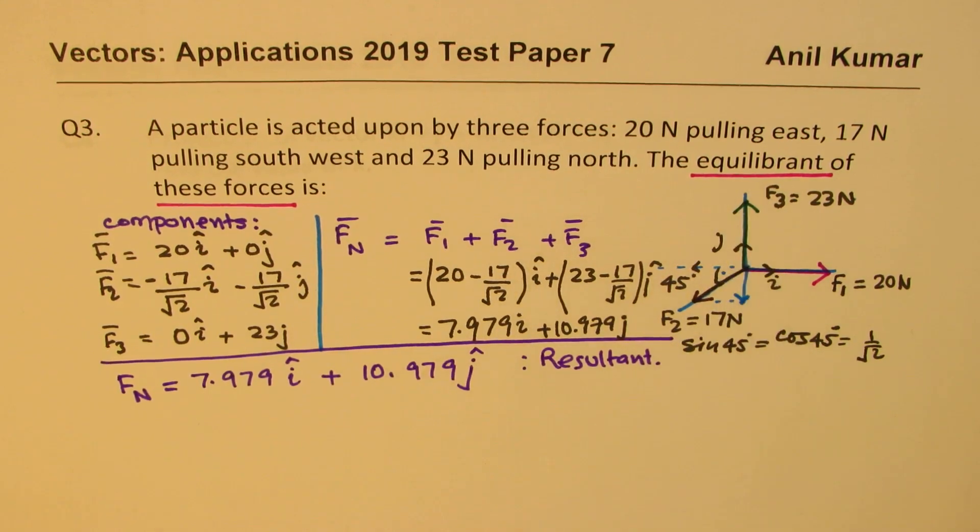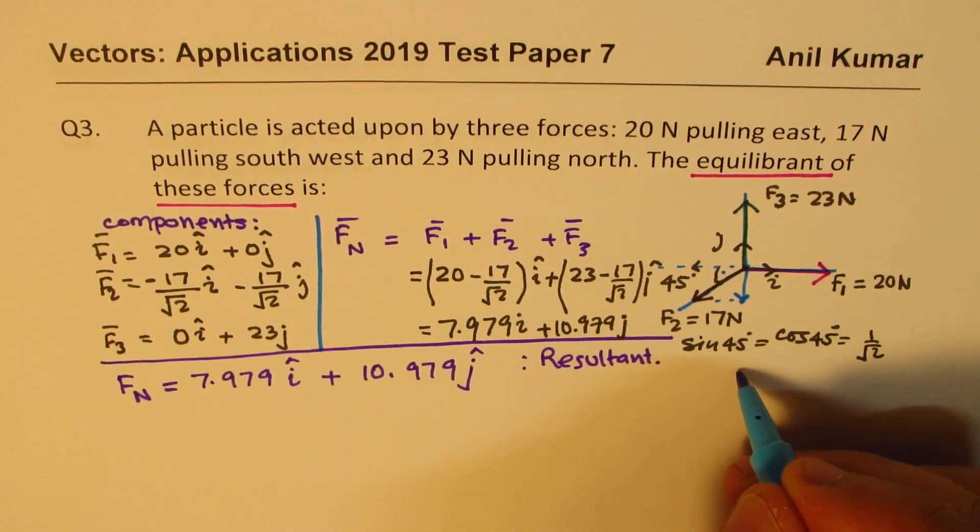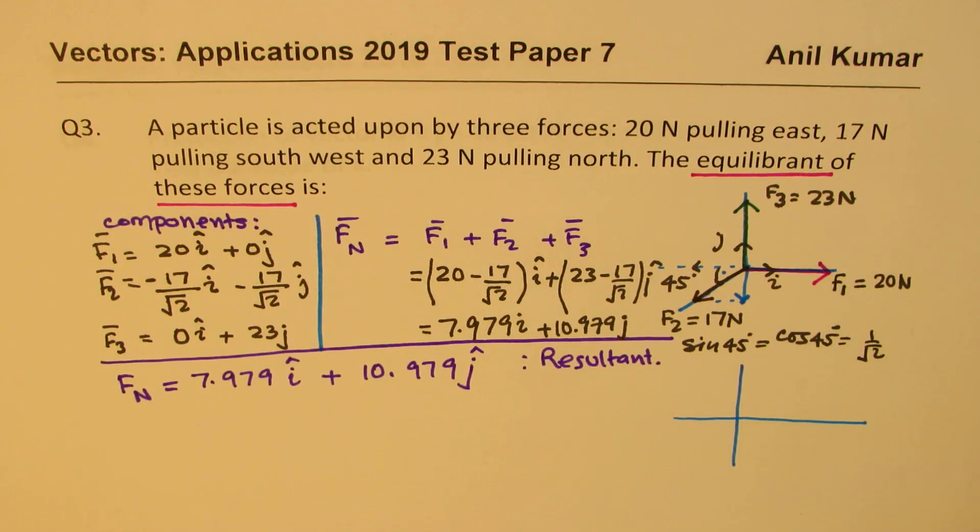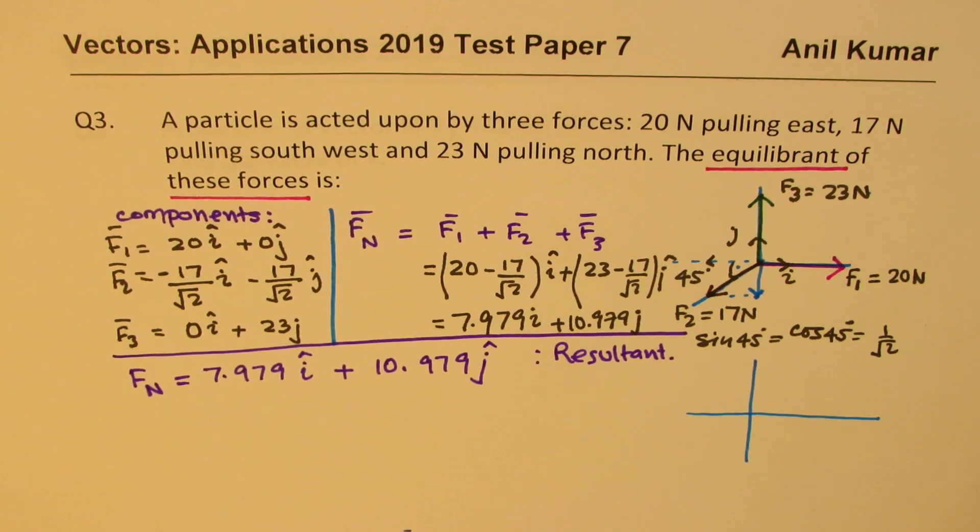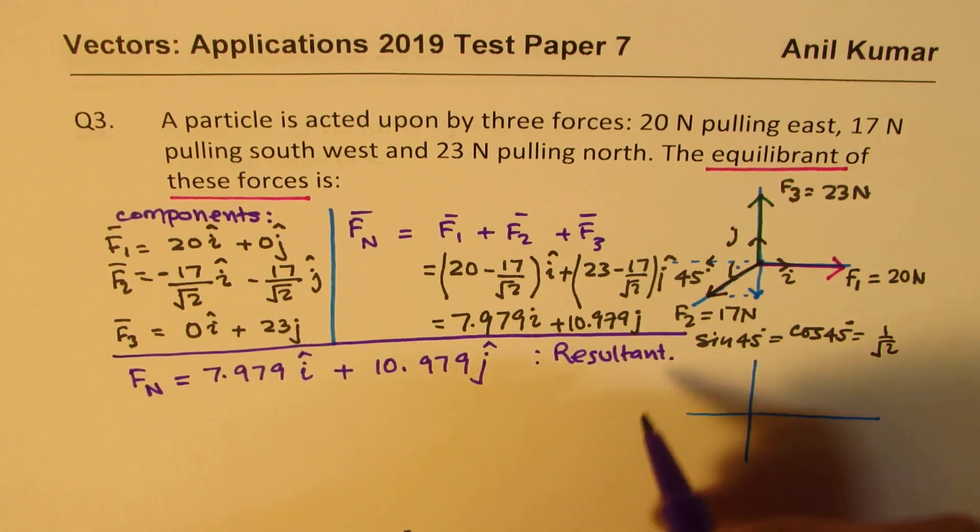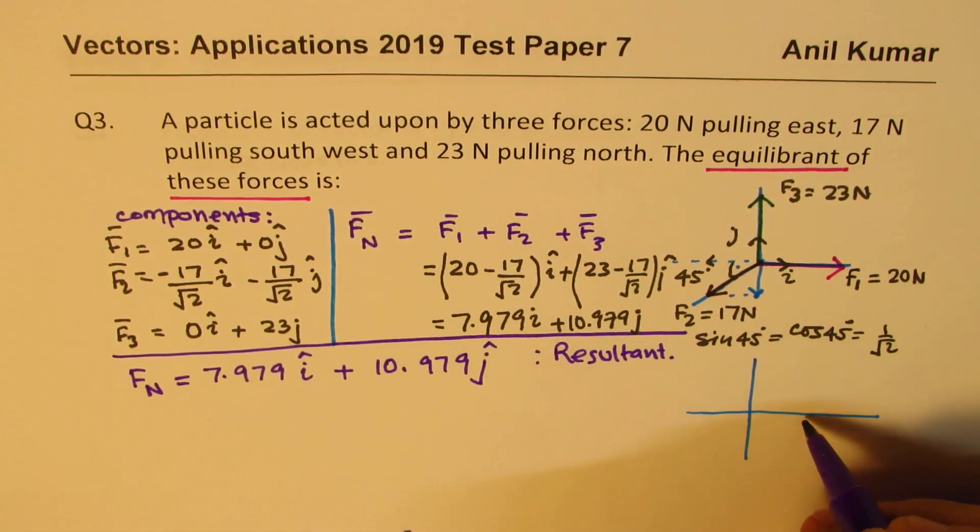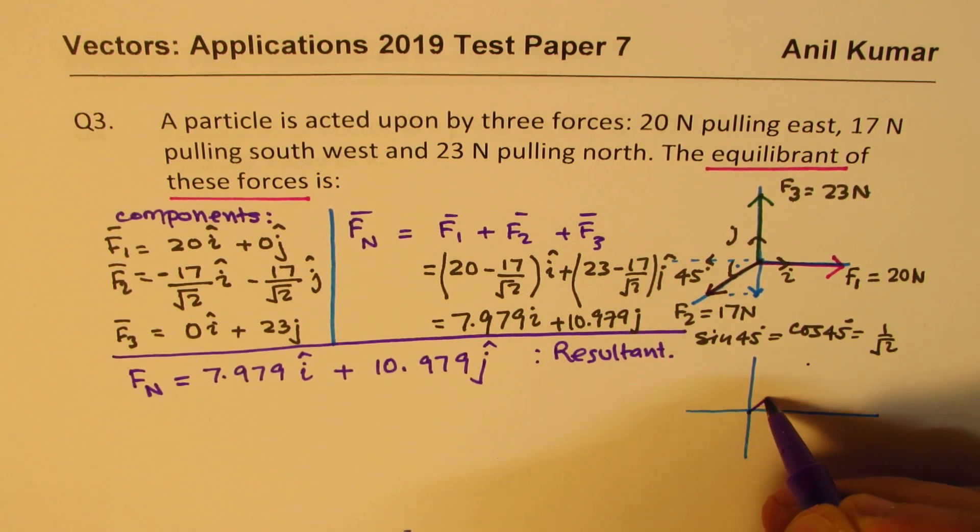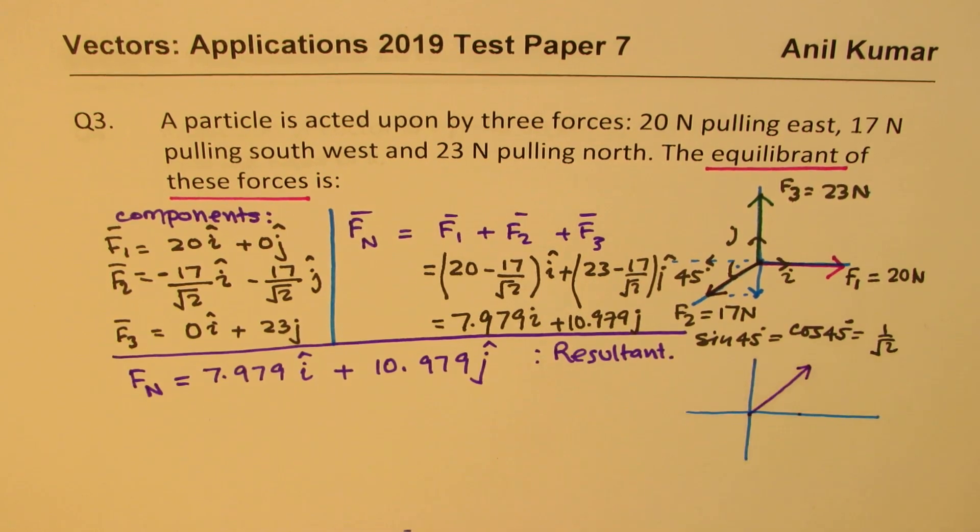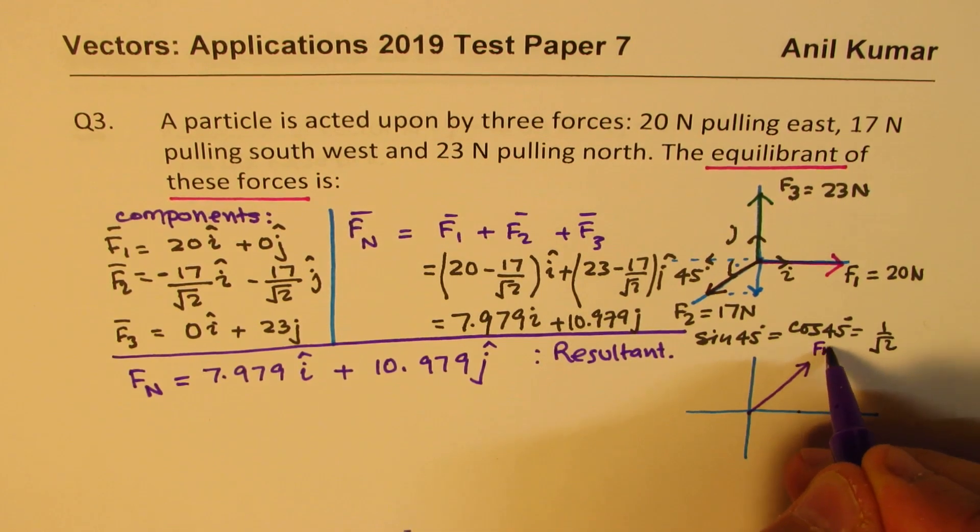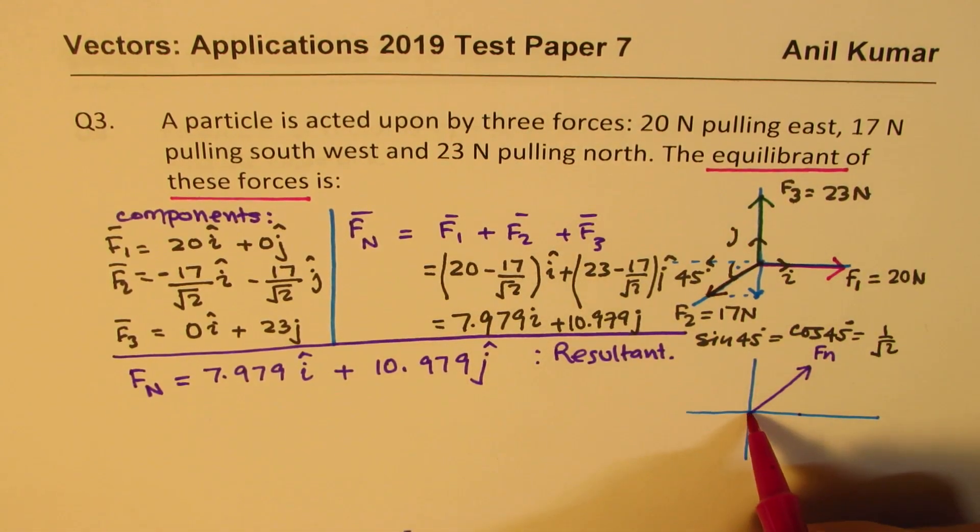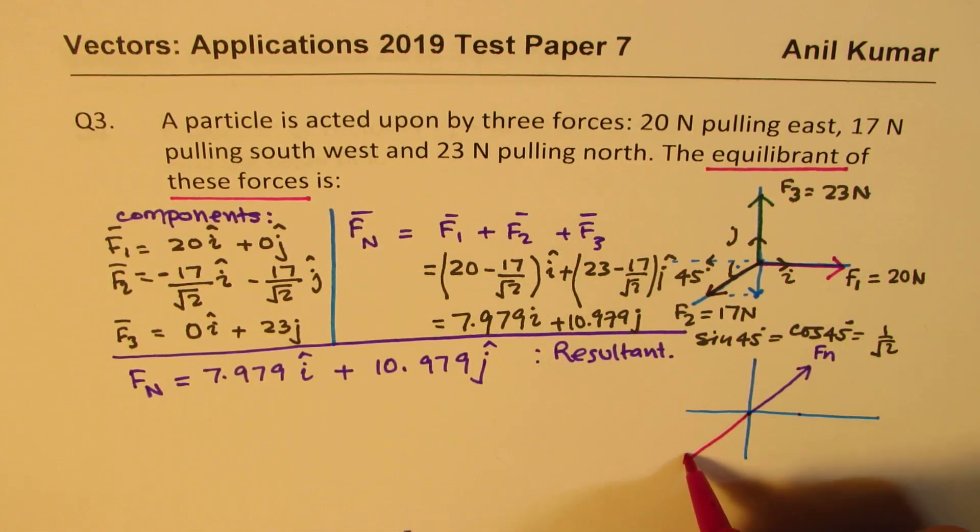So what is going to be the equilibrant force? So what we really found here, let's try to understand this situation. We are saying that the resultant force for us is, let's say 8 units in this direction, 10 units in that direction. That is the resultant force we are talking about, that is F of N. But what are we asking for? We are asking for equilibrant force.